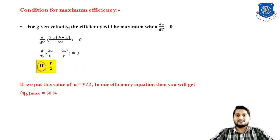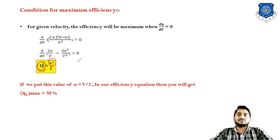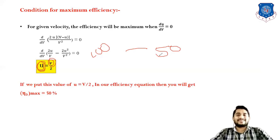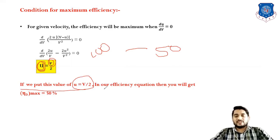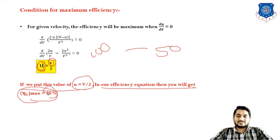So the condition for maximum efficiency for series of flat blades is: maximum efficiency occurs when blade velocity is half of jet velocity, i.e., U = V/2. For example, if jet velocity is 100, blade velocity must be 50. Substituting U = V/2 into the efficiency equation, we get maximum efficiency = 50%.